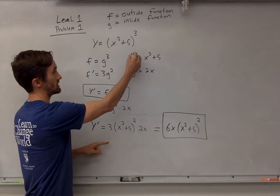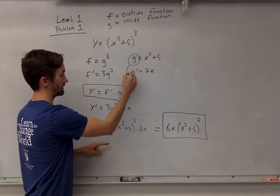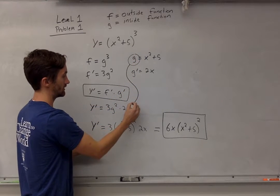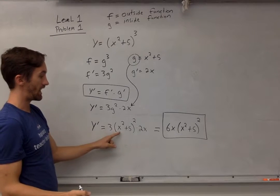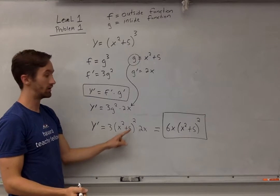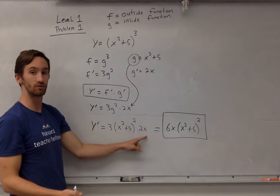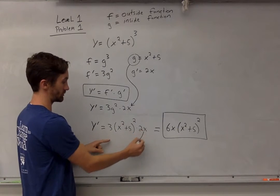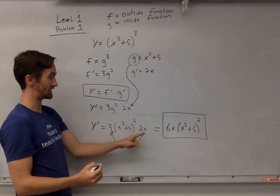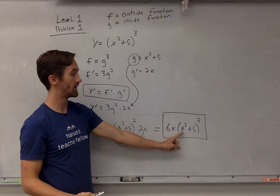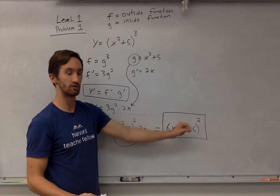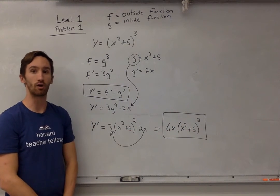Then I'm going to take my g and plug it back into the equation. I get 3(x² + 5)² times 2x. Multiplying this together, I get 6x(x² + 5)². That is problem number one.